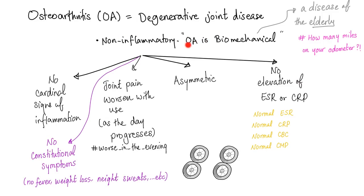Ferritin is going to be high because it's an acute phase reactant. In rheumatoid arthritis, it's inflammatory and can have acute flares. Osteoarthritis is by and large a biomechanical disease — it's non-inflammatory, therefore no cardinal signs of inflammation, no constitutional symptoms, and joint pain worsens with use. As the day progresses, you get more pain and it's worse in the evening.